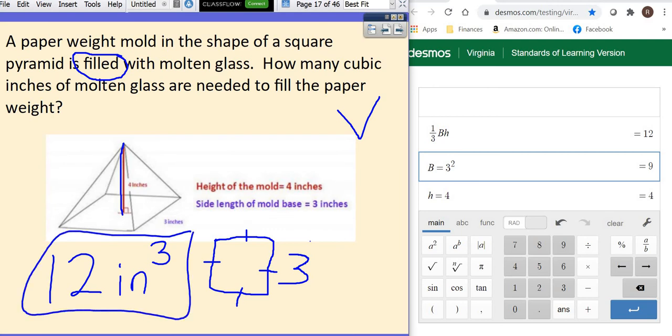So that means the volume here is 12 inches cubed. And that's how much molten glass it will take to fill it. Let's see what's next.